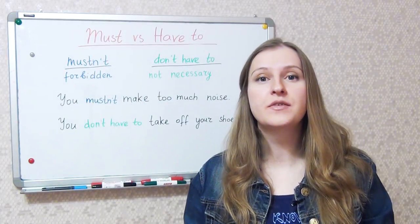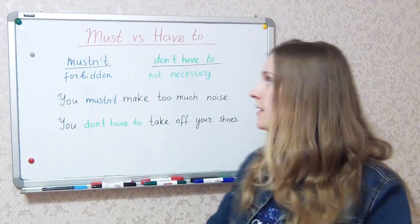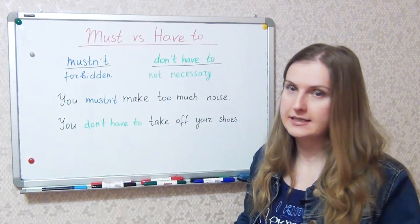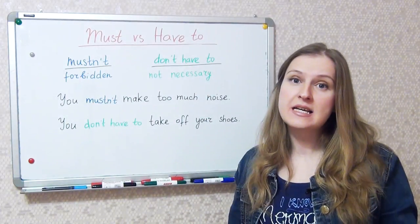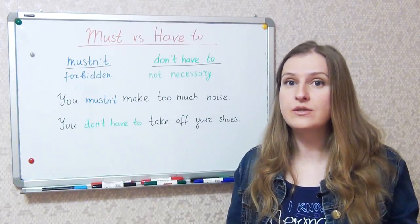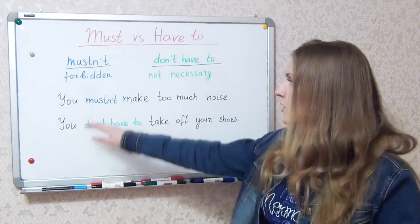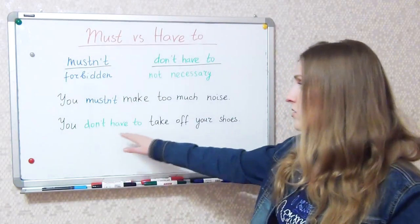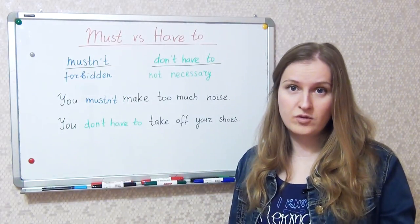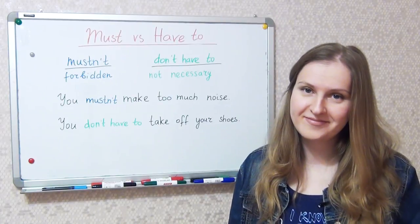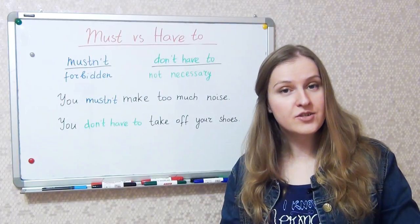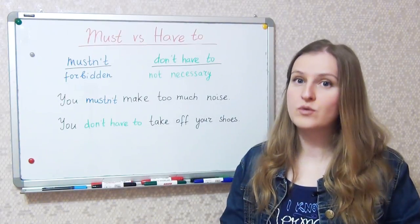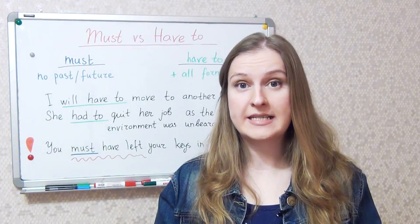Now let's quickly look at the difference between the negative forms. Mustn't means it is forbidden — you can't do it. Don't have to means that it is not necessary; you don't need to do it, but you can. For example: You mustn't make too much noise — the baby is asleep. You don't have to take off your shoes — you can, but you don't have to. However, in some cultures when you visit somebody as a guest, you are supposed to take off your shoes.